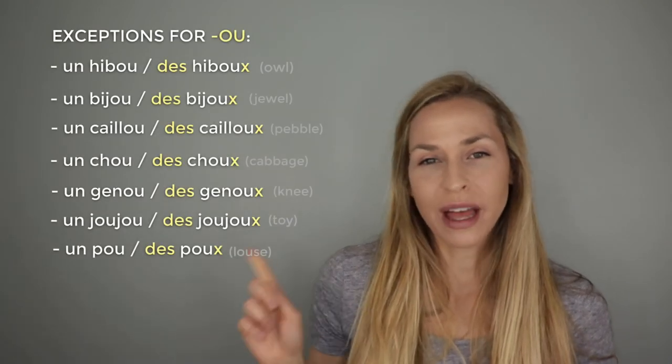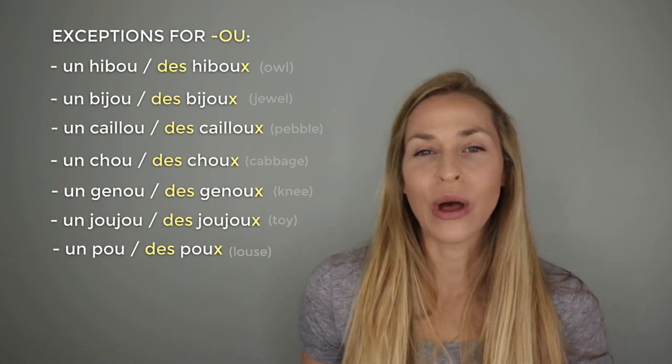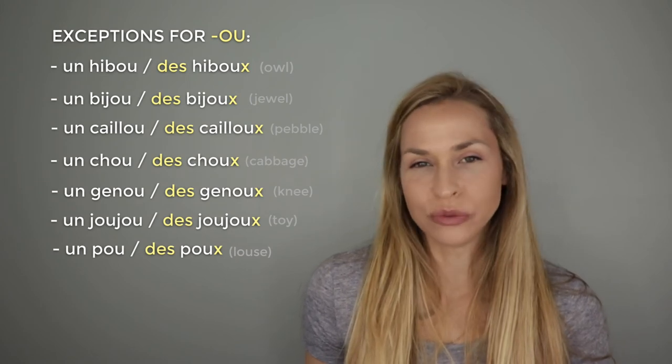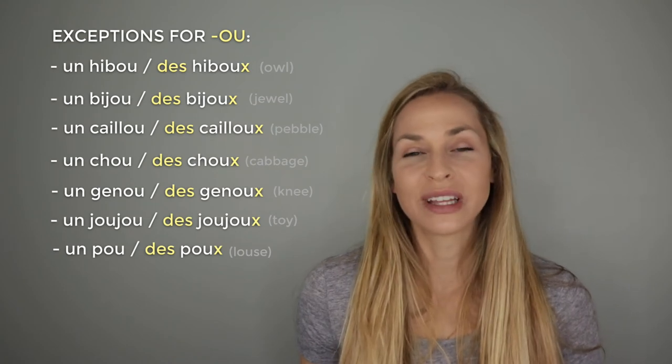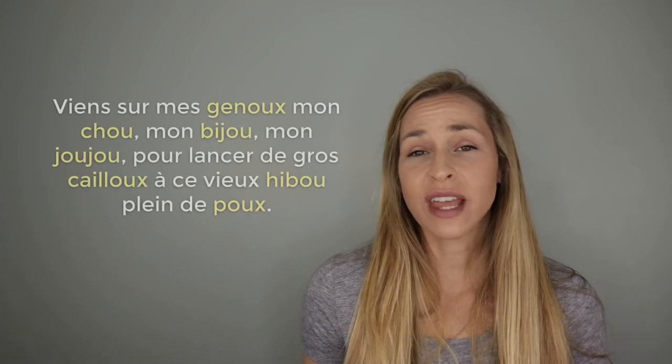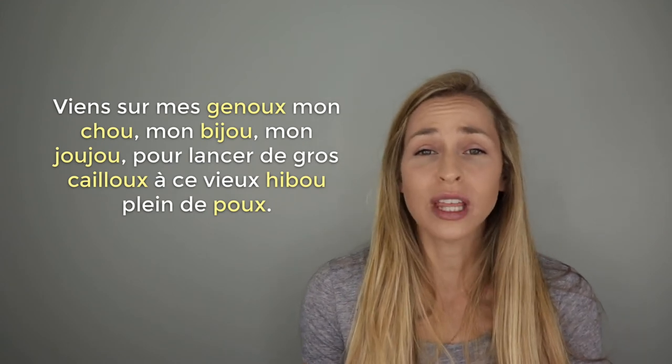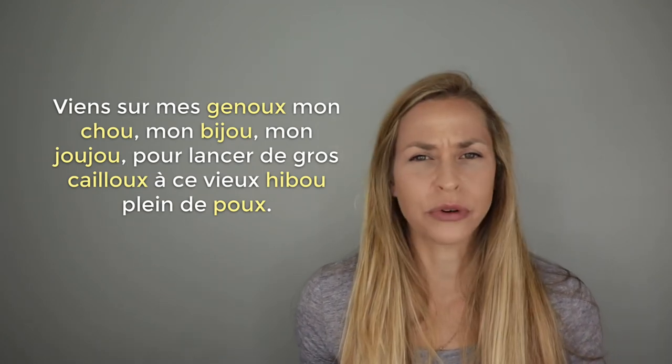These also have exceptions — I swear this is the last bunch! These exceptions add an X instead of an S for the plural. Let's go over them, and I have a song from elementary school to help you remember: un hibou, des hiboux. Un bijou, des bijoux. Un caillou, des cailloux. Un chou, des choux. Un genou, des genoux. Un joujou, des joujoux. Un pou, des poux. The song goes: un chou, des choux — un bijou, des joujoux pour lancer des gros cailloux à ce vieux hibou plein de poux. It's not a very nice song since we're throwing pebbles at a poor owl, but it's a good way to remember those exceptions!